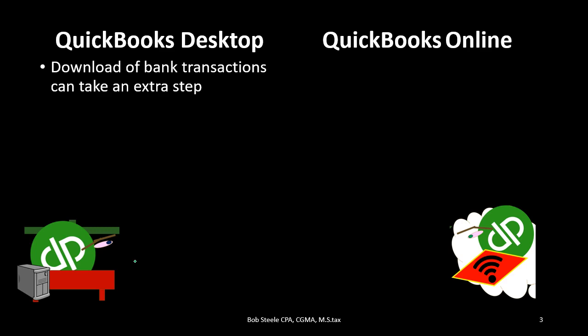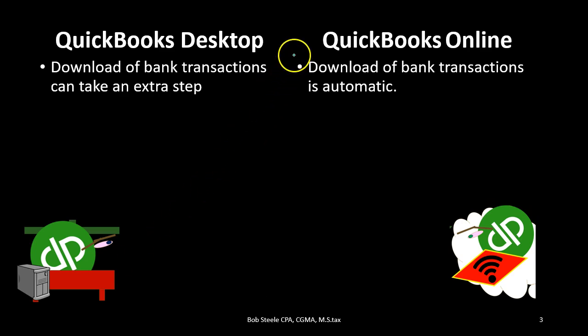Downloading bank transactions can take a little bit of an extra step with the desktop version. One of the big selling points of the online version is its connection to the bank — you can get automatic feeds from the bank to your system. Now that doesn't solve all of our bookkeeping problems, because once we get that data downloaded from the bank, we've still got to allocate it and know how the system works. It doesn't really do the whole thing automatically as you might think at first. The feed with the online version, because it's online and automatically connected, can be a little more streamlined than with the desktop version.